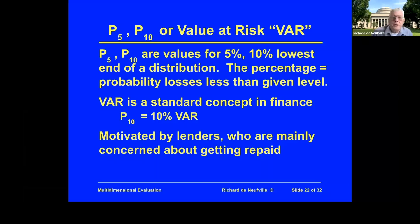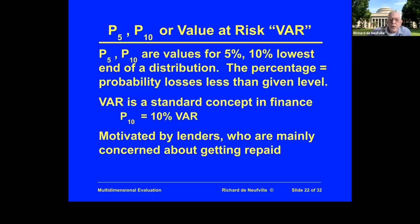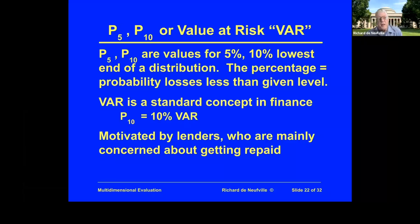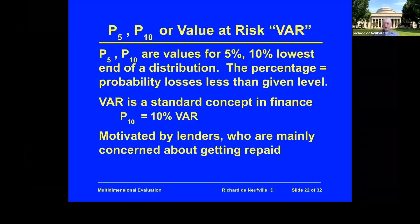A very common one you should know is this notion of value at risk. It reflects, in a standard way, the lowest 5% or 10% of a distribution — the tails of the distribution. It is a standard concept in finance. Banks and others are interested in saying: what's the worst that could happen? How probable is it that this company or borrower is going to have a big loss and not be able to repay? They're concerned with the downside and want to have a figure of what's the value at risk, either at the 5% or 10% level.